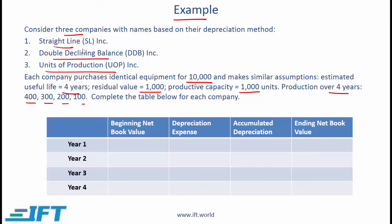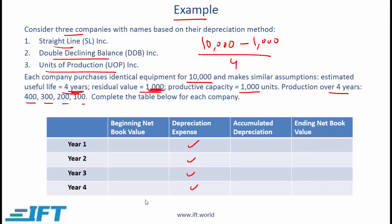For straight-line, the method is straightforward. Every year the depreciation is a fixed amount. We take the original cost of 10,000 minus the salvage value of 1,000, divided by four years — giving a depreciation expense of 2,250 per year for all four years. The ending net book value should be the residual value of 1,000, meaning total depreciation over the four-year period is 9,000.